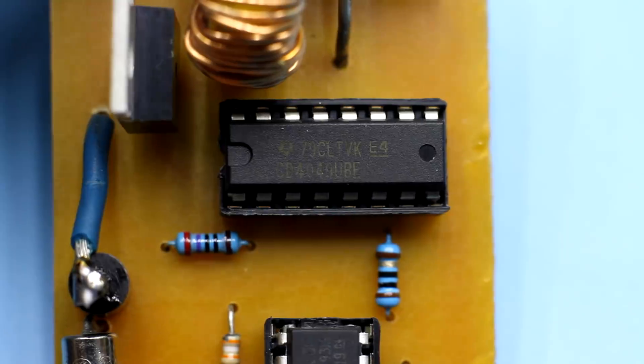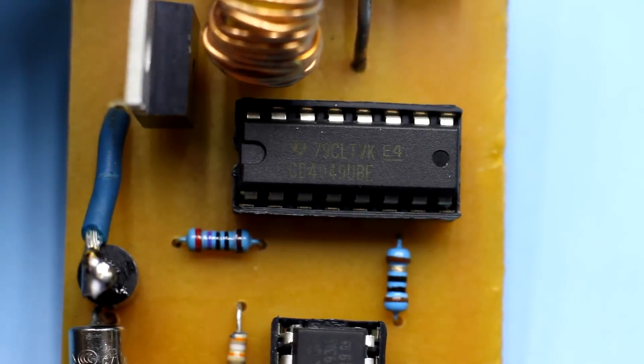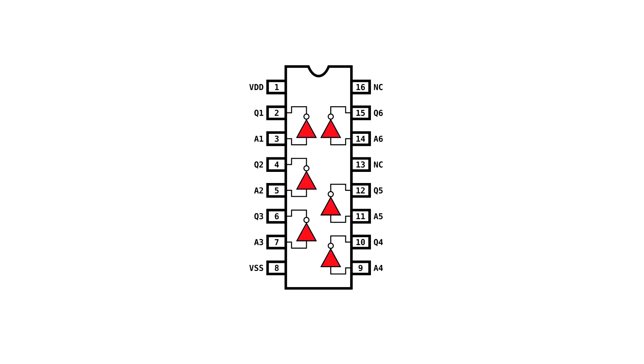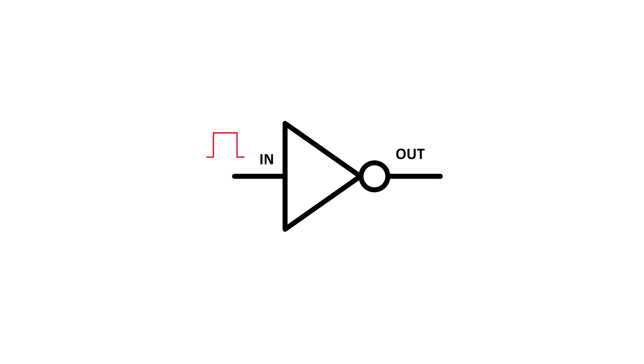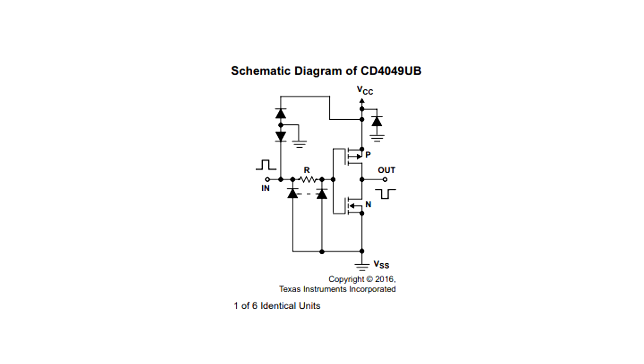The CD4049 chip is a CMOS logic and contains 6 logical inverters NOT. Each inverter has one input and one output. Their task is negation. If the input receives a high level, the output is the opposite. In other words, we will get an inverted signal.